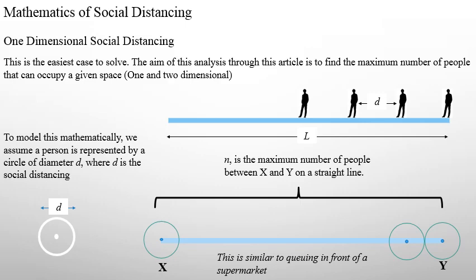There are some places where it may be 1 or 1.5 meters, but my analysis can be for any D. So if I assume there is a segment between x and y, then how many people can we accommodate between x and y maximum so that we obey the social distancing?